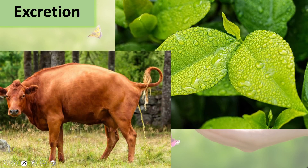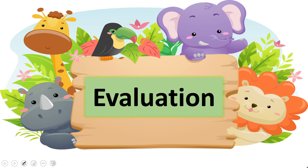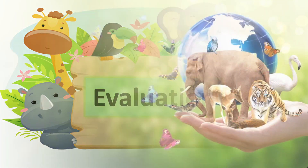Both plants and animals also have excretion. In animals, excretion happens through sweating and urination, whereas in plants, excretion occurs through evaporation and water loss. These are the different characteristics of both plants and animals.